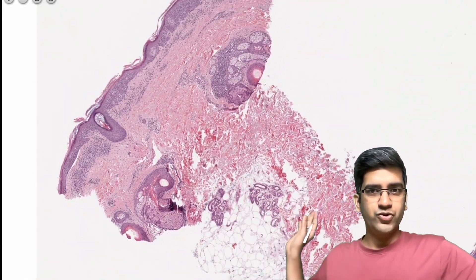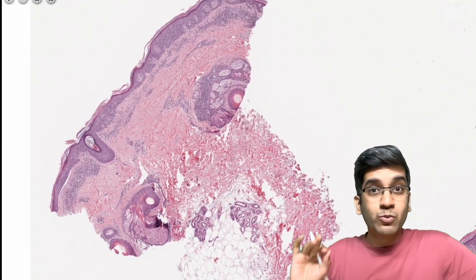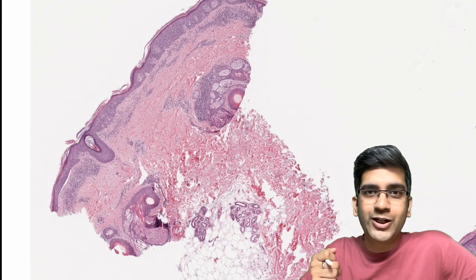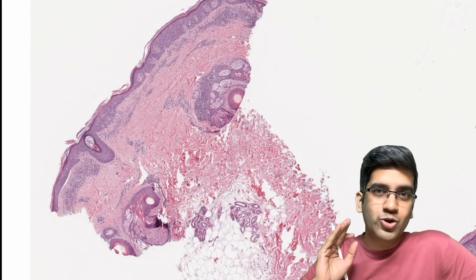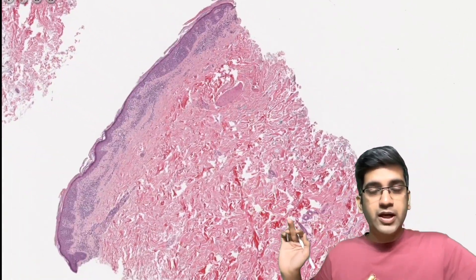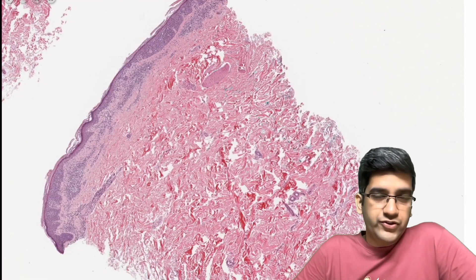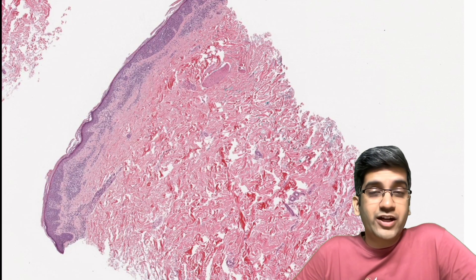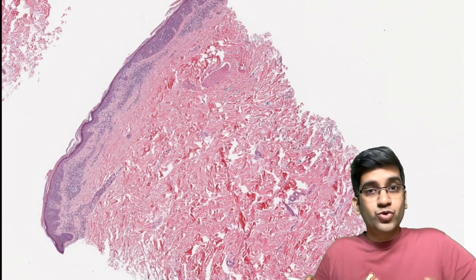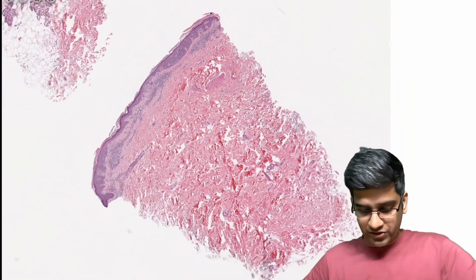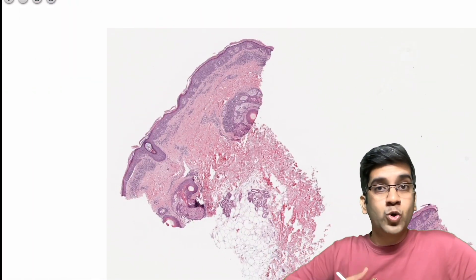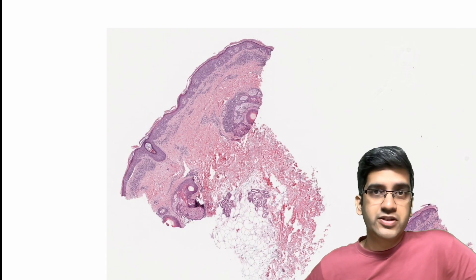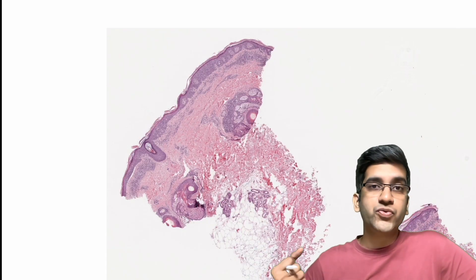This is the skin biopsy case. The most important thing in a skin biopsy is to gross it very carefully — a tiny 4mm tissue — you might lose what is important if it's not grossed properly. Whenever you're going to suspect a malignancy, please don't take multiple sections; maximum two sections. The reason is you have two cut surfaces, and you might also need more tissue for markers.